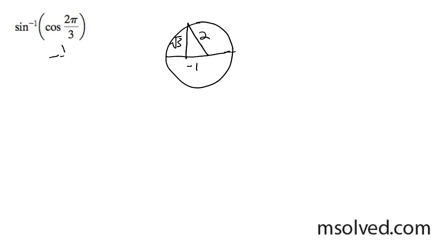Its cosine is going to be -1/2, so we're ending up solving for -1/2.